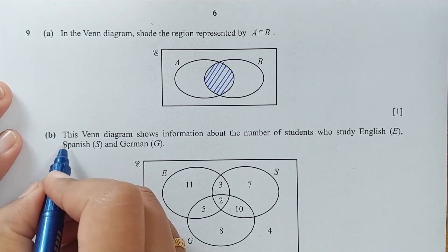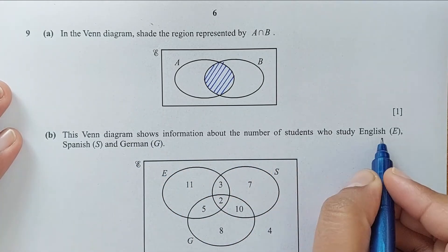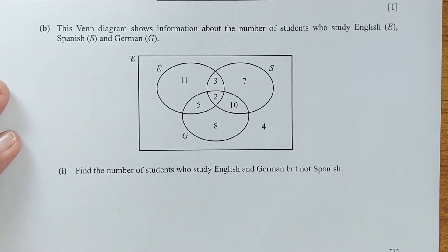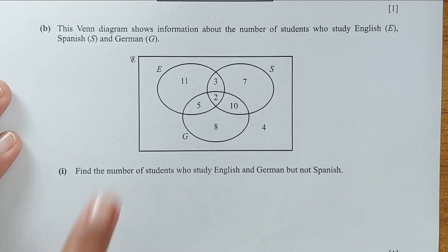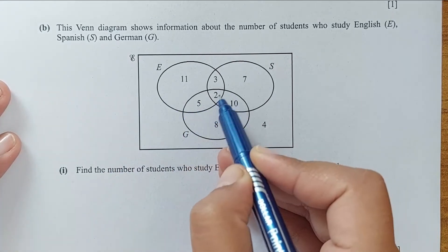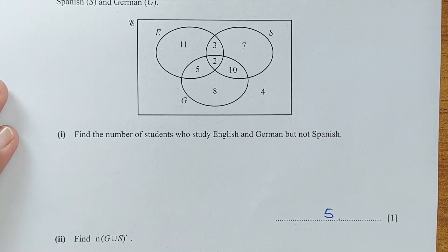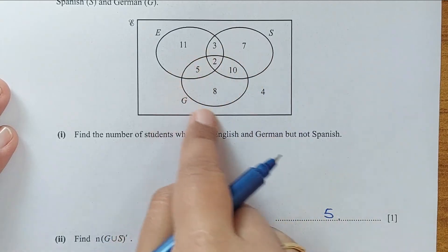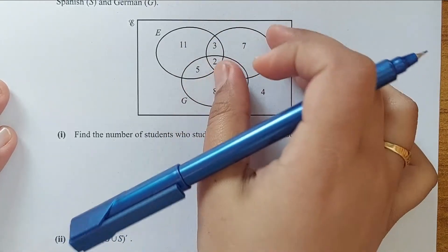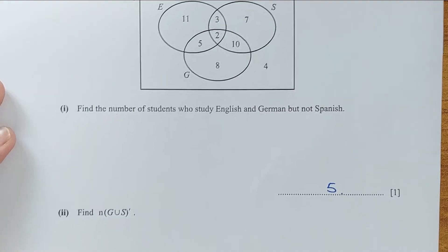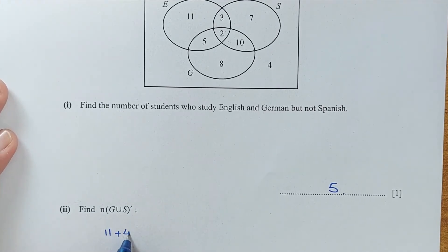Now for part B. The Venn diagram shows the number of students who study English E, Spanish S and German G. For part 1, find the number of students who study English and German but not Spanish. English and German but not Spanish is this region, which is 5 students. For part 2, find G union S complement. G union S complement is the number outside G and S, which is 11 plus 4 equals 15.